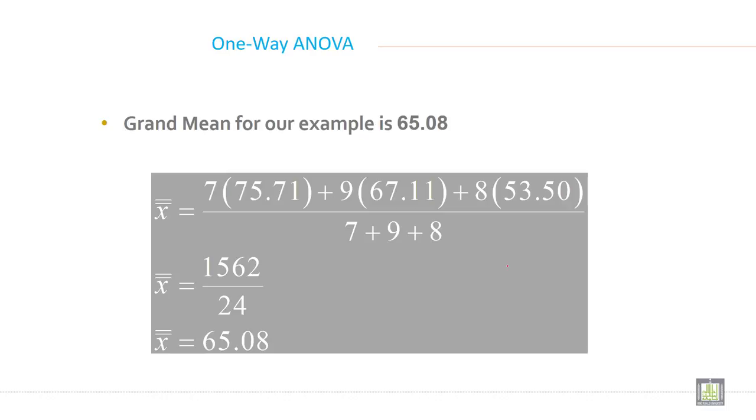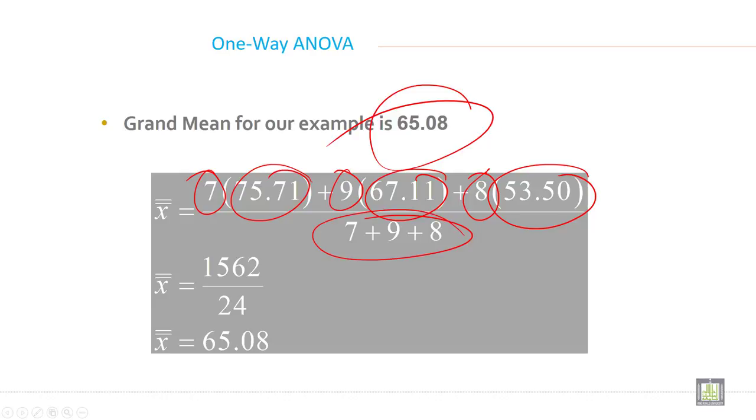The grand mean for our example is 65.08. How? You put all the values, all the means. This is average, this is average, and this is average. These are the sample sizes for front row, front sitter, middle sitter, and back sitter. So the sum of Ni times Xi bar divided by N1 plus N2 plus N3. When you calculate this, you will get grand mean as 65.08.